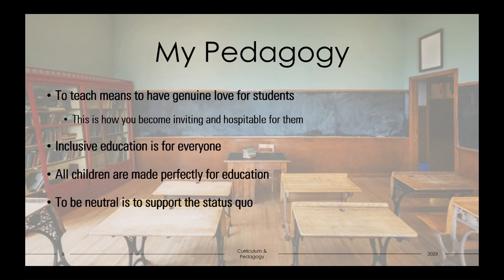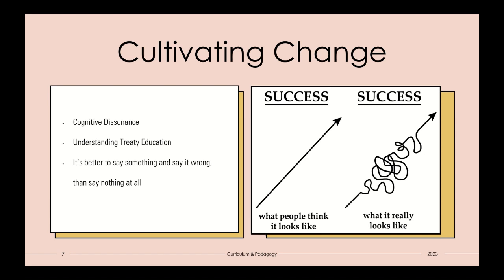Next, to be neutral is to support the status quo. This was a huge concept in relation to Kumashiro and bias and dominant narratives. Educators are never neutral, nor is education. But I'll say it again, anti-oppressive education is not a destination, but an ongoing process. Though I have yet to work in a classroom environment because of the pandemic, I hope that when I do, my students feel welcomed to be their truest selves, no matter what that looks like.